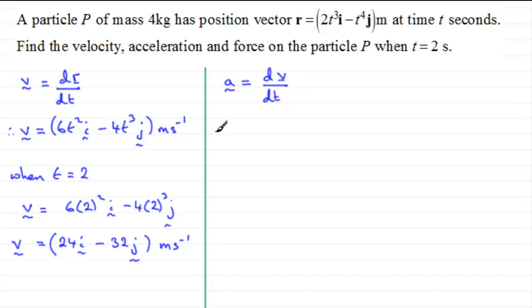And if we do that, we've got the acceleration a equals, and we take this equation here, differentiating this. For the i component, we get 6 times 2, which is 12. Reduce the power by 1 on the t, so you get 12t in the i direction.